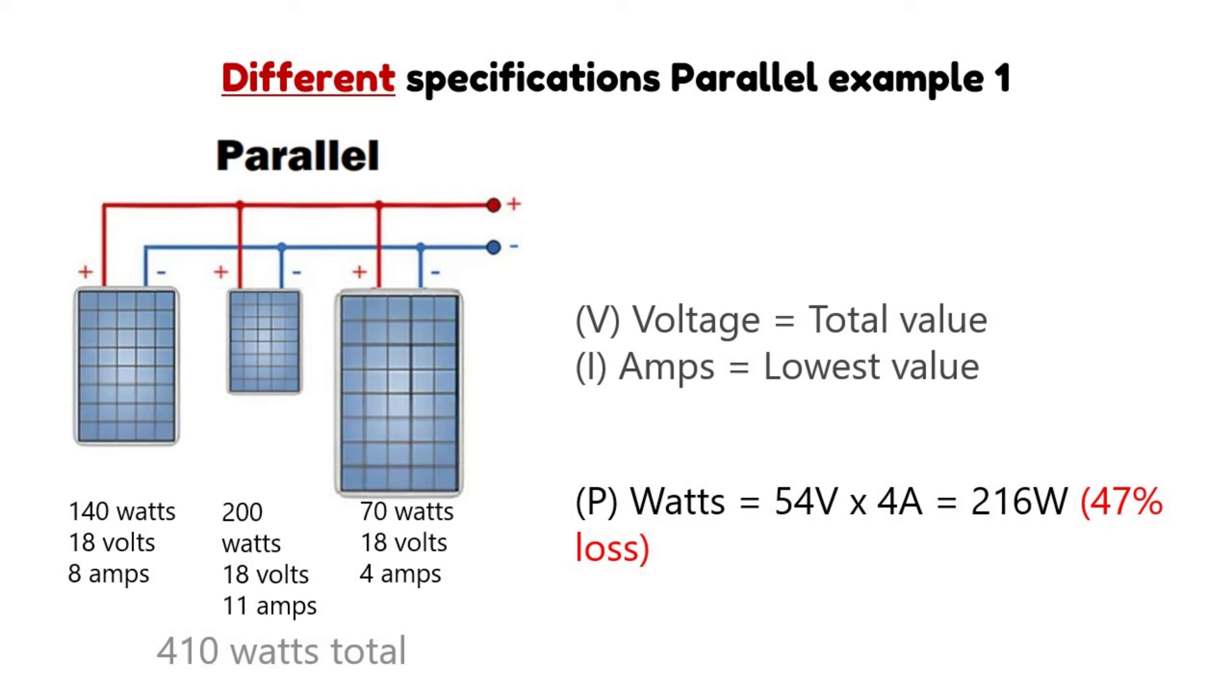And what's going to happen when we connect three different solar panels in parallel? In the first example we have the same panels as in the first example when we played in series, so the voltages are the same and the amps are different in the system. Here the voltage will be the total value of all three solar panels connected together and the amperage will be the lowest value. So in this case it's 54 volts and just 4 amps which is 216 watts. So here connecting these ones in parallel will give you 47% loss, while when we connected the same panels in series we got 0% loss.